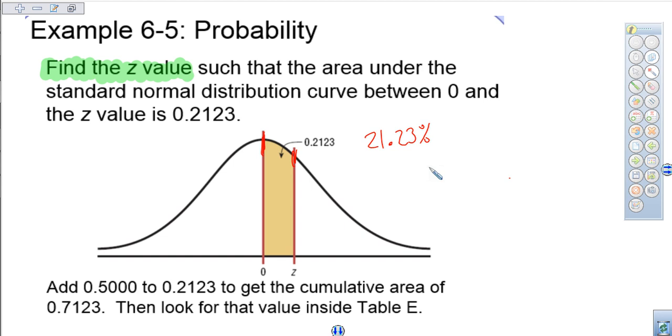Remember, though, as we build upon this, before we go look at Table E, Table E tells me the area from a z-score all the way to the left, all of this area, not just to zero, not just to the mean,